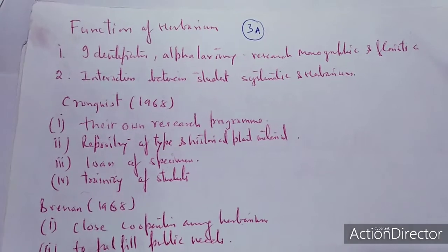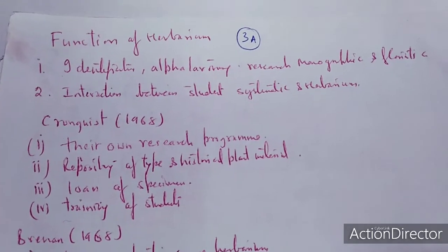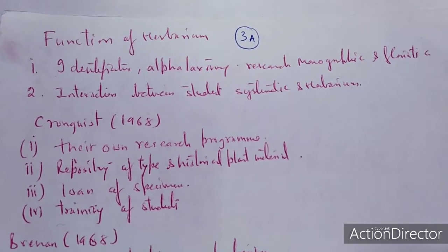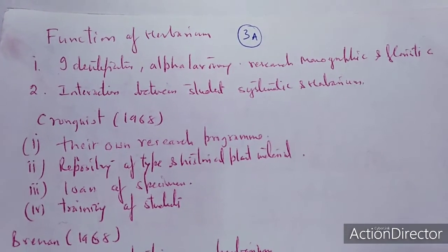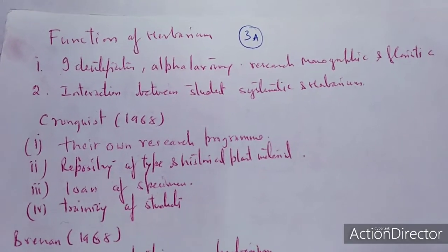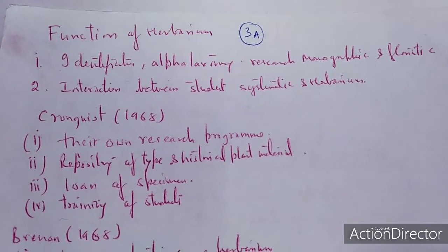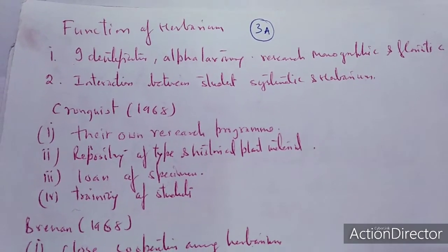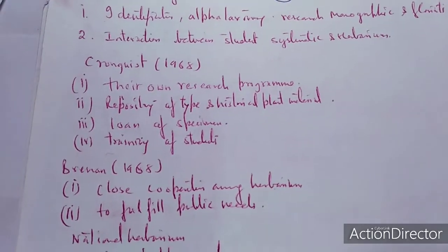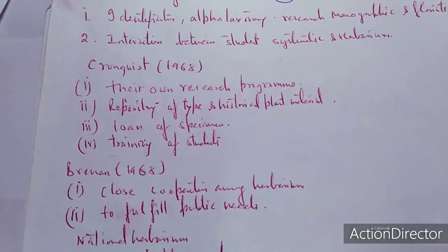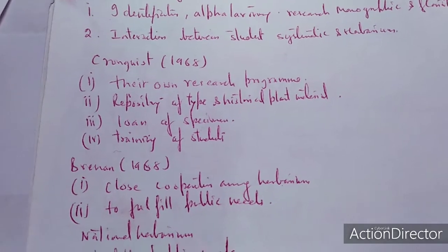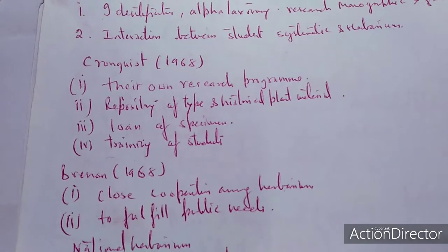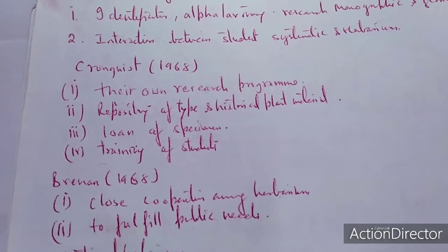There are certain functions associated with the herbarium. Herbarium is required for identification. It is the basis of alpha taxonomic studies, which cannot be done without the herbarium. It is required for research, monographic as well as floristic studies. The interaction between students of systematics and herbarium is a must. Concrast in 1968 suggested that the herbarium is not only a collection of dried plant specimens, but should have its own research program. It is a repository of type and historical plant material.